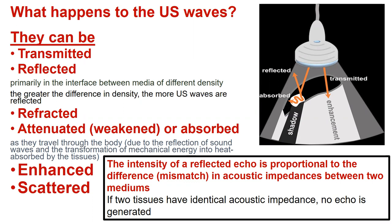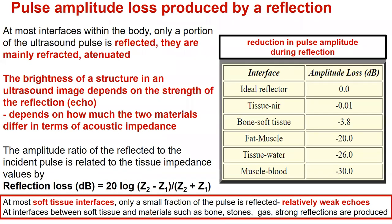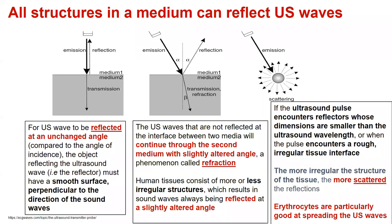The intensity of a reflected echo is proportional to the difference in acoustic impedance between two media. If two tissues have identical acoustic impedance, no echo is generated. At most interfaces within the body, only a portion of the ultrasound pulse is reflected. The brightness of a structure in an ultrasound image depends on the strength of reflection, which depends on how much two materials differ in terms of acoustic impedance.